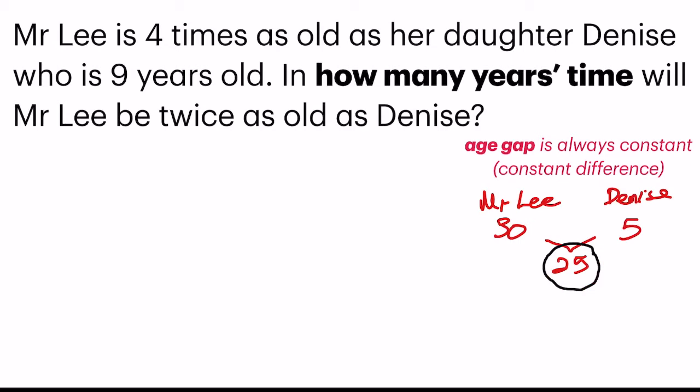Why? Because Mr. Lee will age by one year the year after, and Dennis will also age by one year. So you see, since both of them increase in age by plus 1 and plus 1, the age gap difference is constant.